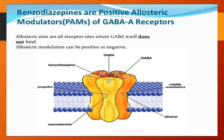In brief, benzodiazepines increase the frequency of chloride ion channel opening, potentiate the effects of GABA, and require the presence of endogenous GABA. Whereas barbiturates are GABA-mimetic agents — they do not require the presence of endogenous GABA at higher doses, and they increase the duration of chloride ion channel opening, causing hyperpolarization and decreasing neuronal excitability. Thank you all for watching — please subscribe, like, and comment.